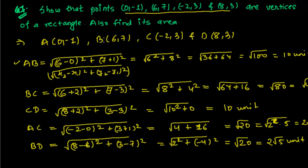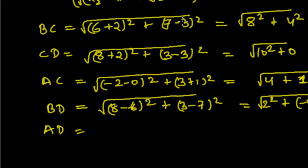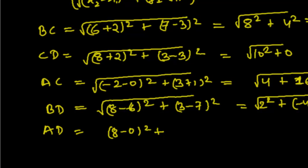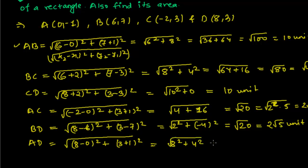Now let's find AD. Difference of x-coordinates: (8 - 0) = 8, squared, plus difference of y-coordinates: (3 - (-1)) = 4, squared. So √(8² + 4²) = √(64 + 16) = √80 = 4√5 units. We get AD = 4√5 units.